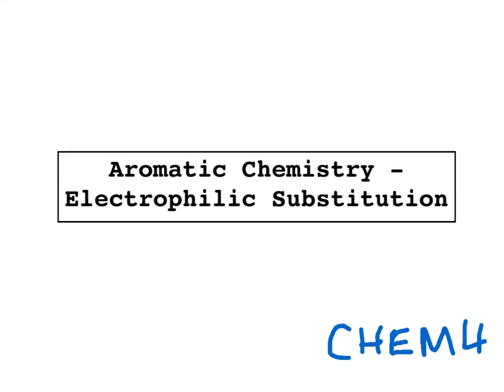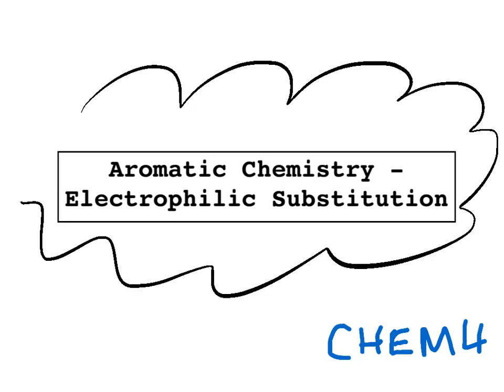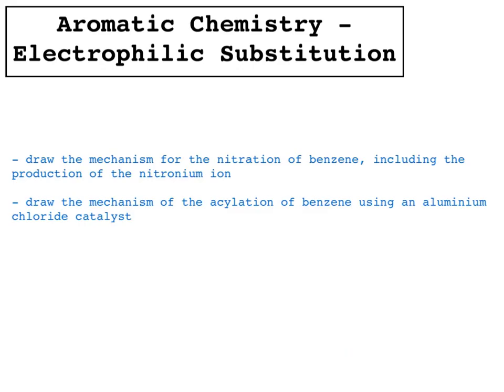This video is on electrophilic substitution. There are two aims: firstly, to be able to draw the mechanism for the nitration of benzene, including the production of the nitronium ion — you need to know both equations for the production of that ion. And to draw the mechanism for the acylation of benzene using an aluminium chloride catalyst — you need to know the equations for that as well as the mechanism.